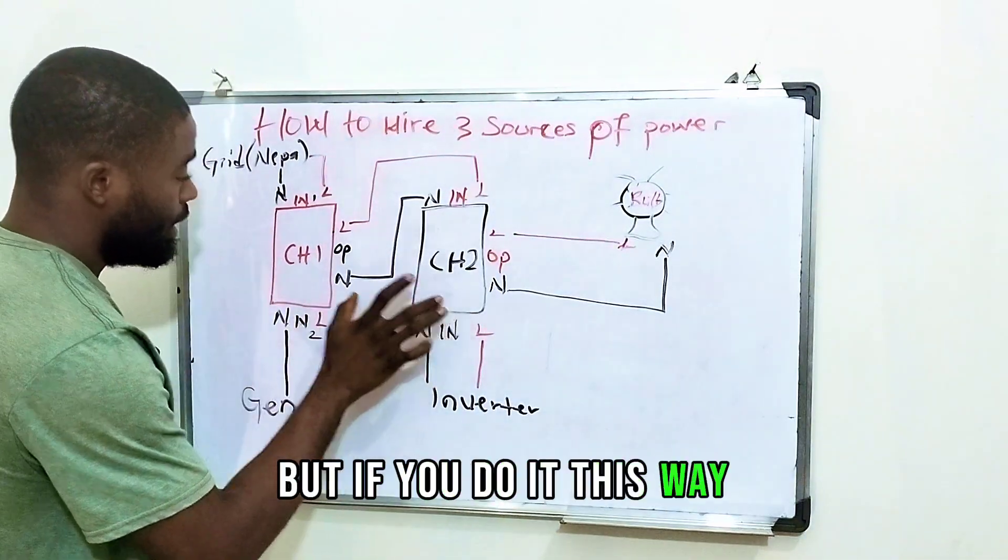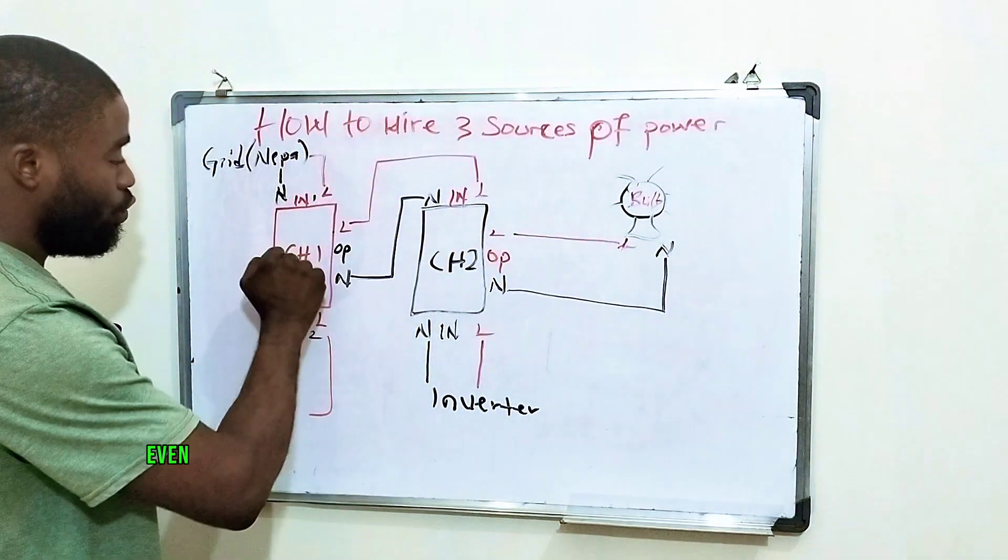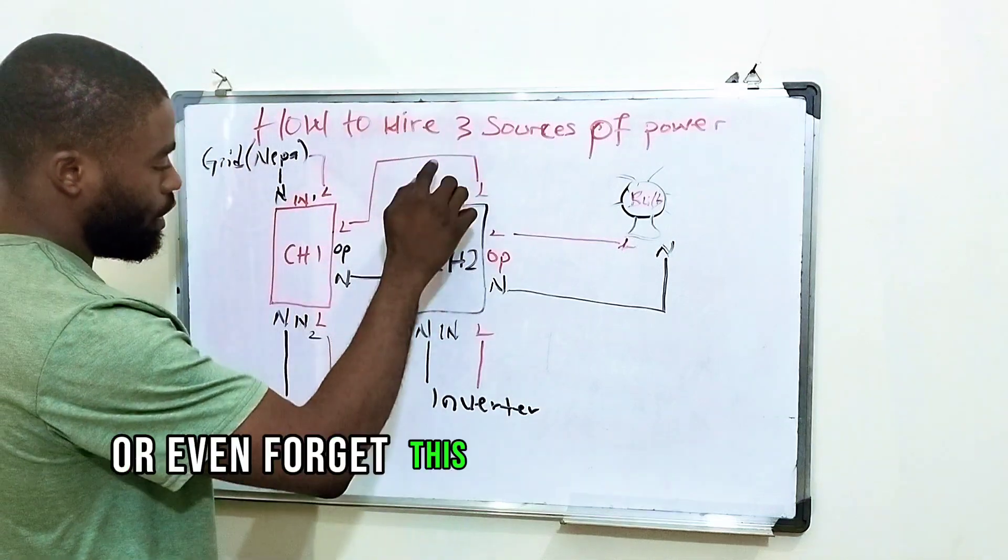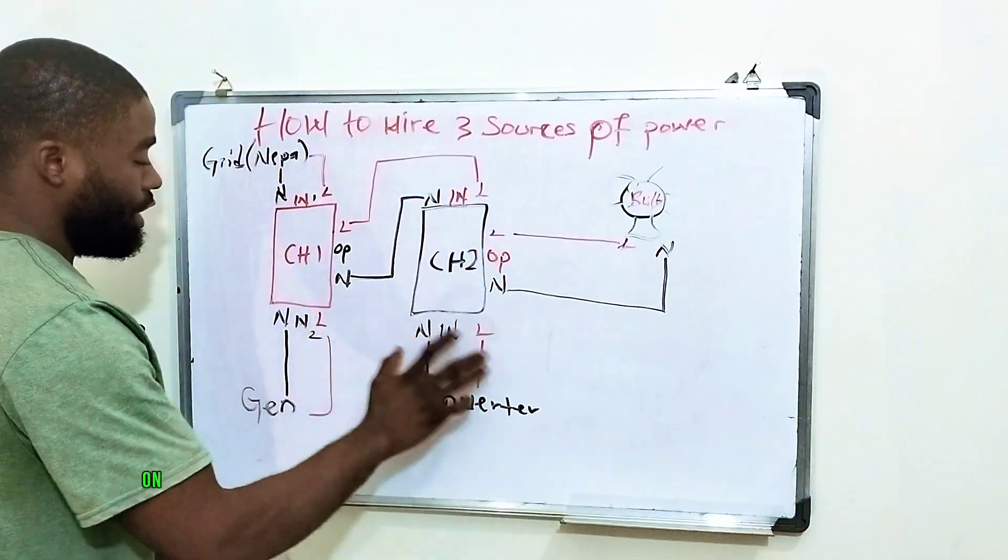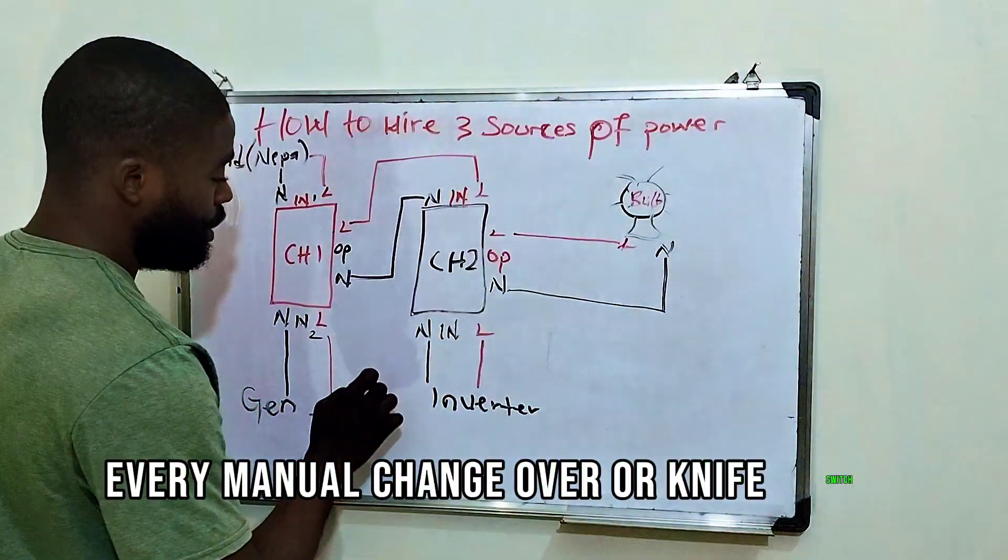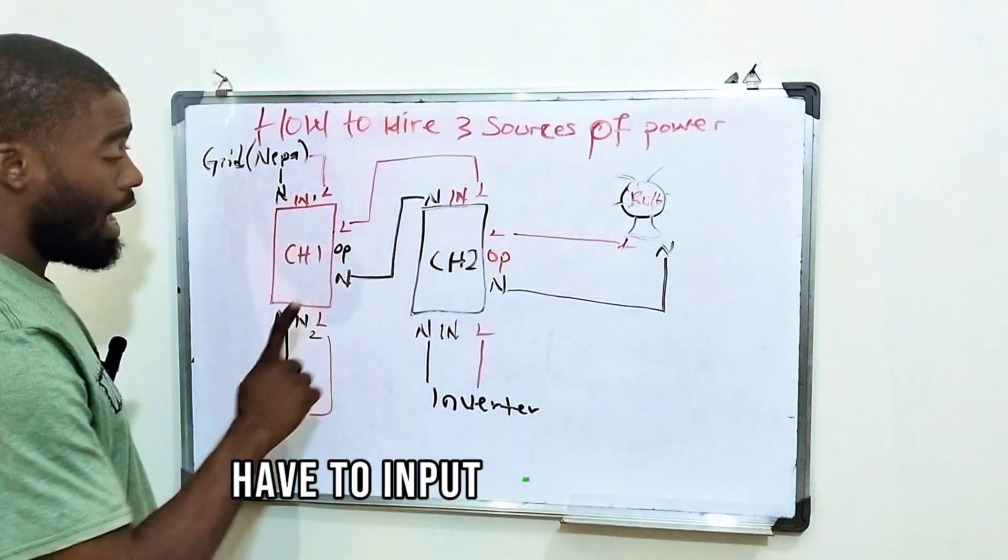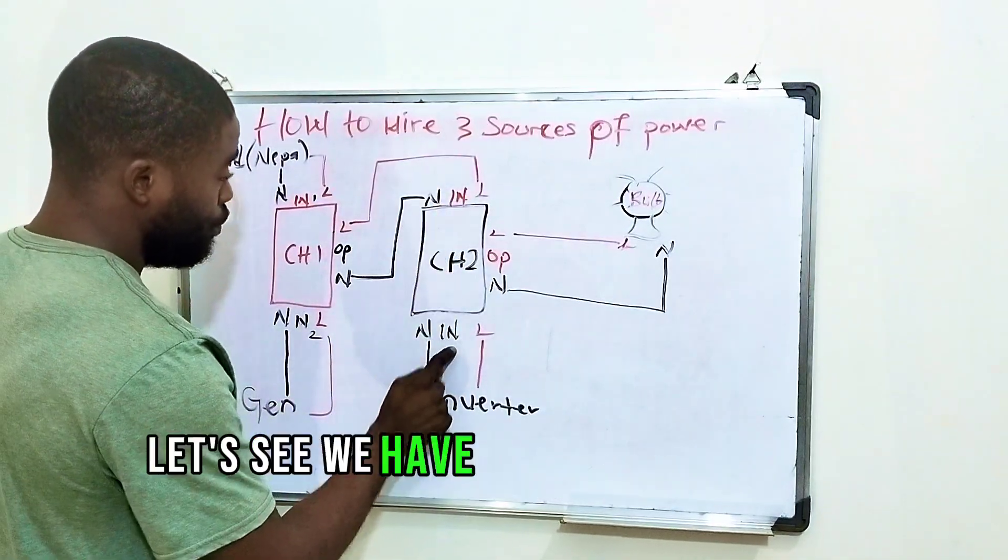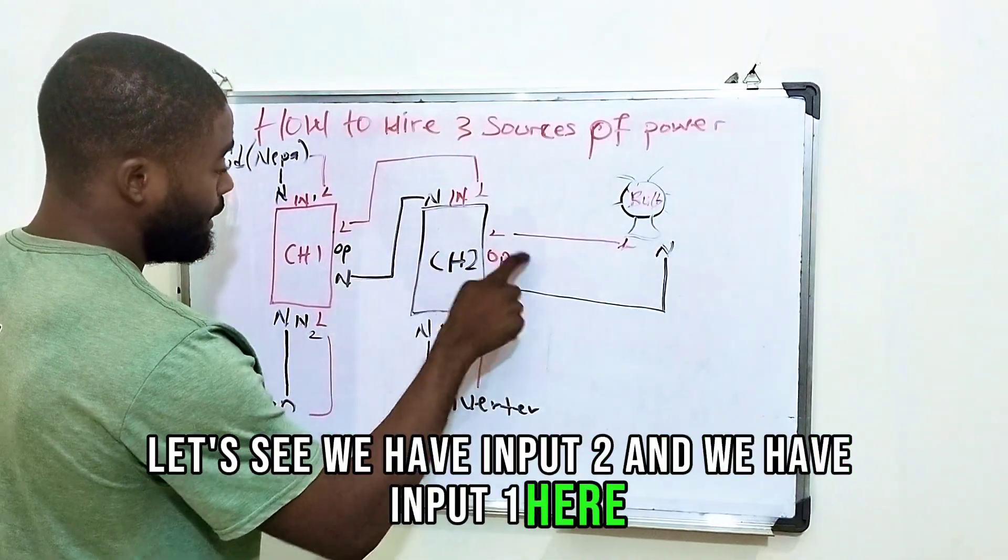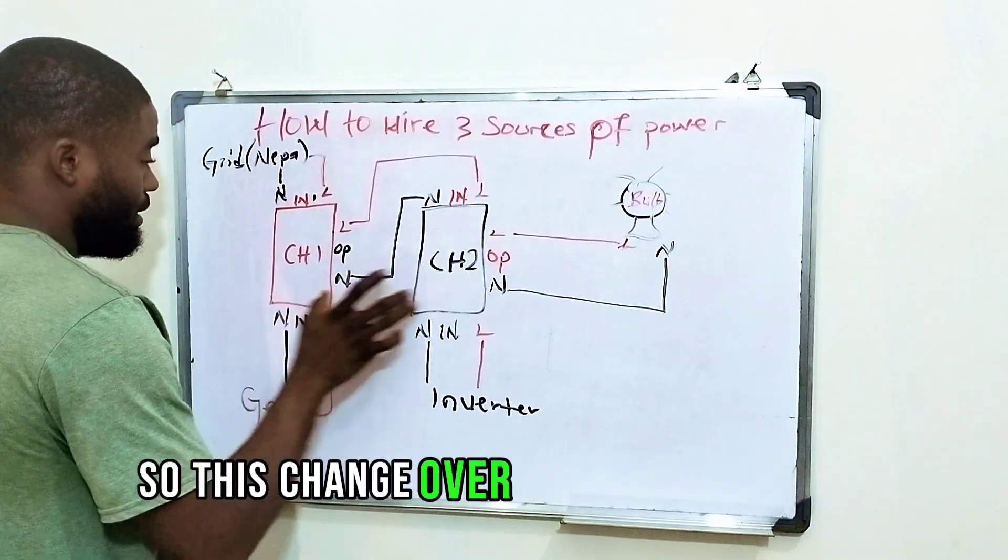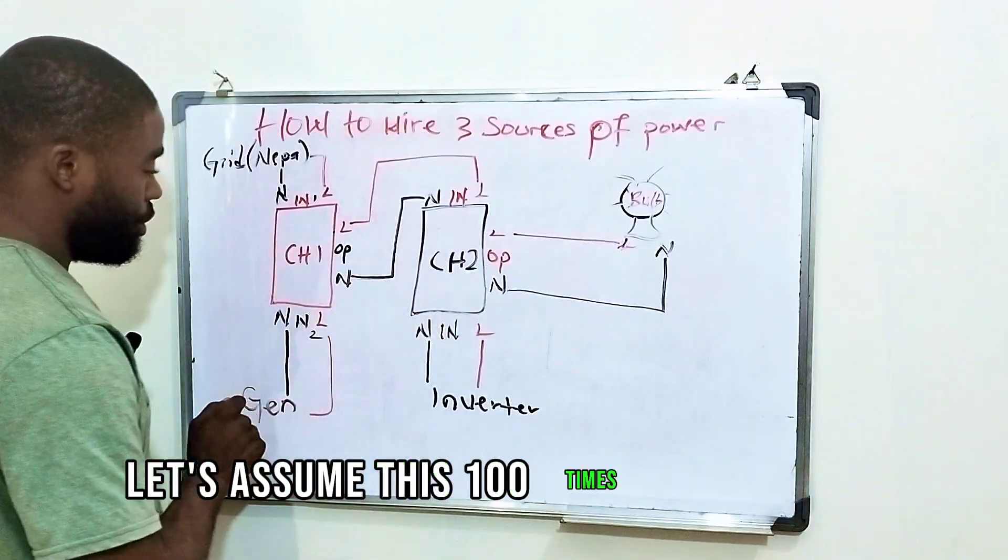But if you do it this way, there will never be collision of light even when you forget your changeover down or you forget this one up, or forget this one down on any of these three sources of light. Every manual changeover or knife switch has two inputs and one output. So we have input two and we have input one here. Then we have one output. We have another changeover here.